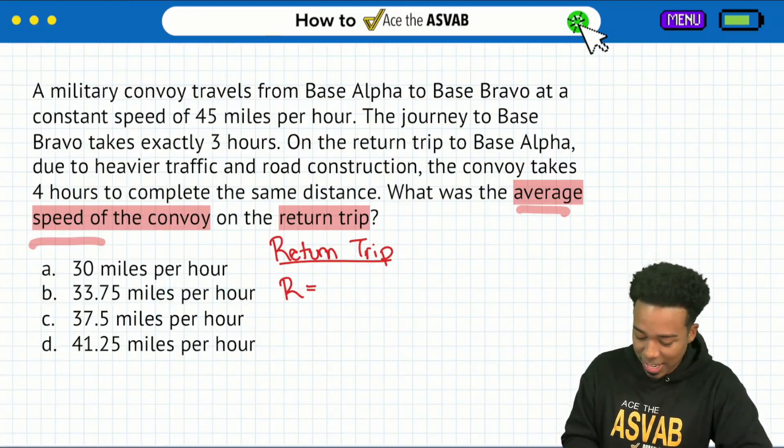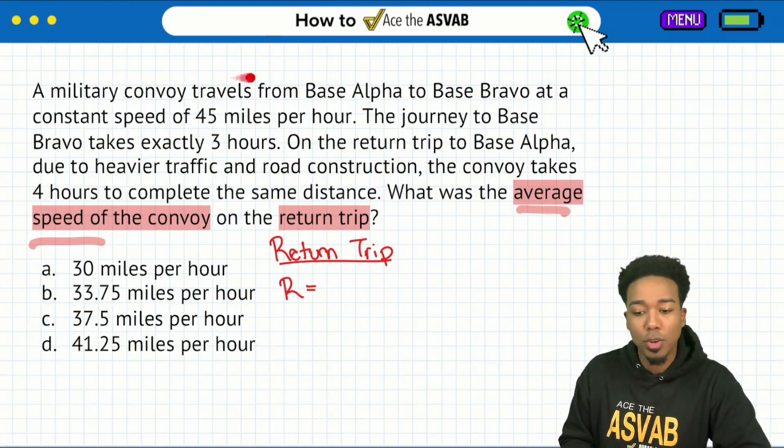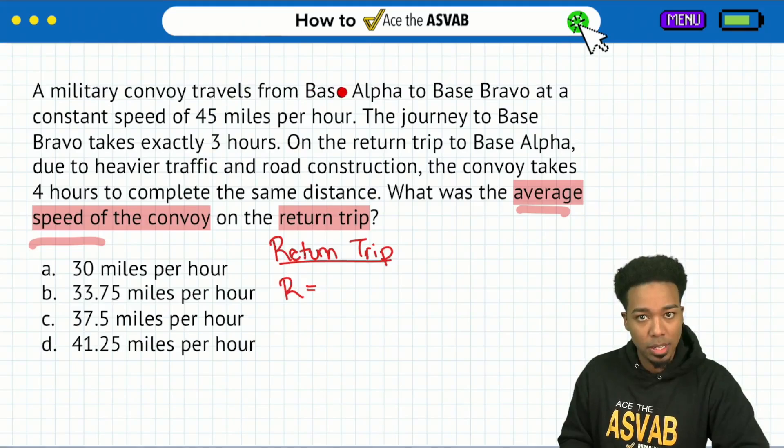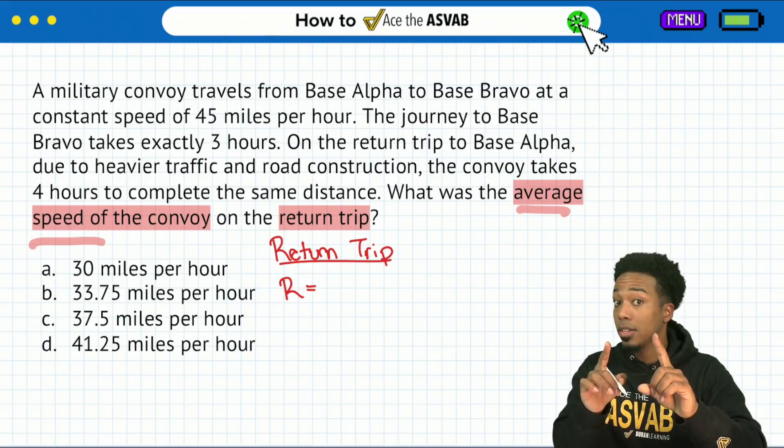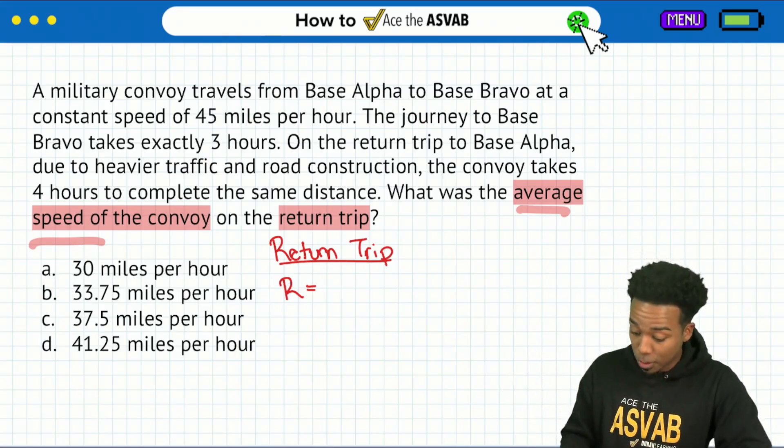So let's go ahead and read through the information so we can understand what it is that's going on here. First thing, at the top, a military convoy travels from base alpha to base bravo at a constant speed of 45 miles per hour. Then the journey to base bravo takes exactly three hours. On top of that, the return trip to base alpha. There it is. Now we're talking about the return trip. So don't get confused.